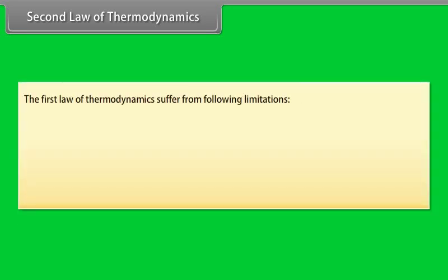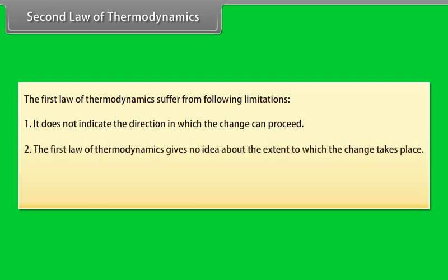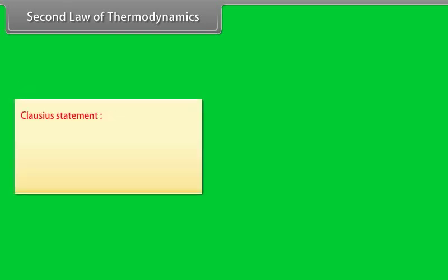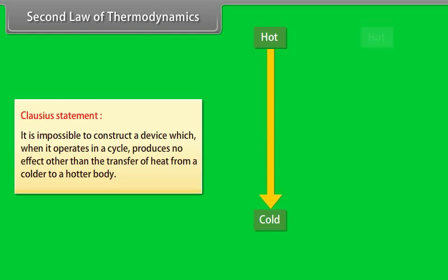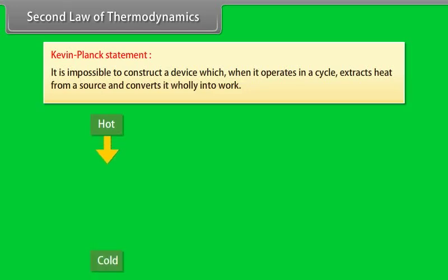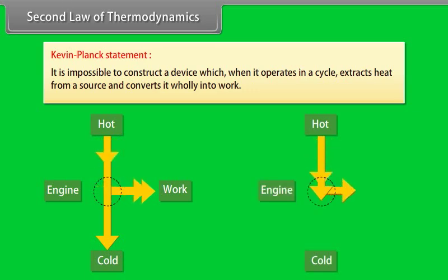Second Law of Thermodynamics: the first law does not indicate the direction in which a change can proceed, nor does it give any idea about the extent to which changes take place. The second law concerns the direction in which energy transformation naturally takes place. Clausius statement: it is impossible to construct a device which, when operating in a cycle, produces no effect other than the transfer of heat from a colder to a hotter body. Kelvin-Planck statement: it is impossible to construct a device which, when operating in a cycle, extracts heat from a source and converts it wholly into work.